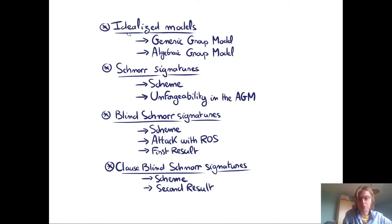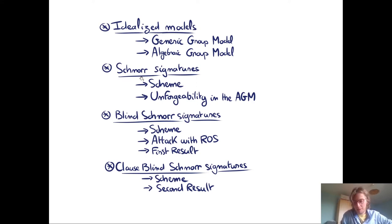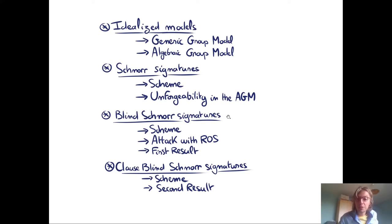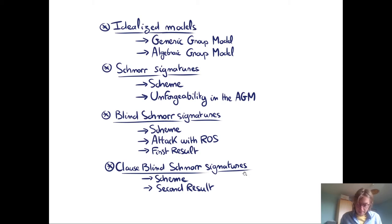First, I want to introduce the idealized models. I will talk about the generic group model, and I will also introduce the algebraic group model that we use in the paper to do all the proofs. Then I will talk about Schnorr signatures — introducing the scheme and proving unforgeability in the algebraic group model. Then I will introduce Blind Schnorr signatures, show how we can attack them with the ROS problem, and finally talk about closed Blind Schnorr signatures and the second result of the paper.